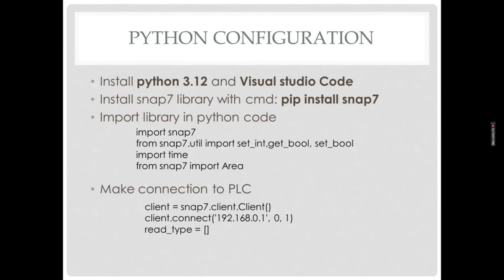In Python, we need to install Python 3.12. Visual Studio Code is also required to edit the Python script. We will also need to install the Python Snap7 library. In the command prompt, just type 'pip install snap7' and it will be installed.